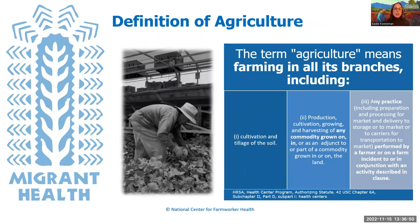The definition of agriculture as defined in legislation involves everything from prepping the soil, seeding, planting, growing, picking, and packing to transporting. Agriculture means farming and all of its branches, including crop production, animal production and aquaculture, and support activities involved in those industries.